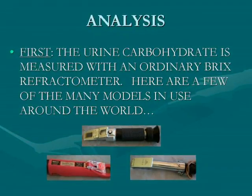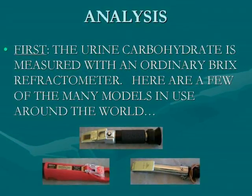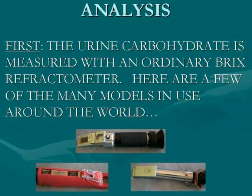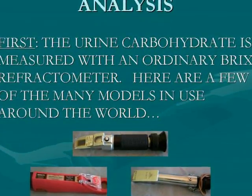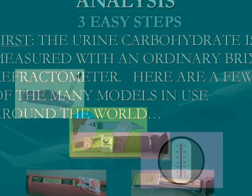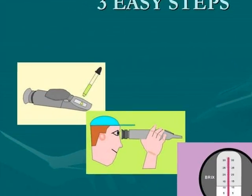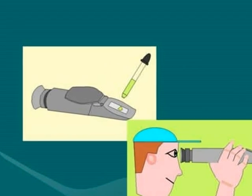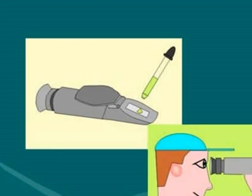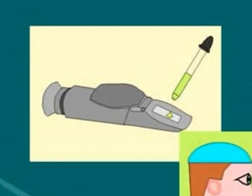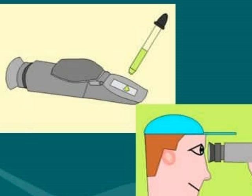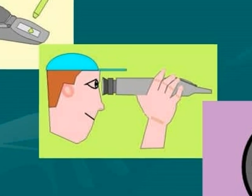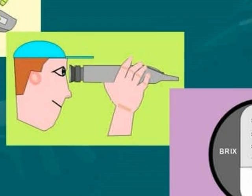The first part of the test or analysis is to measure the BRICS of the urine. Here are a few refractometers. Which kind you use doesn't matter as long as it's a good, high quality one. Urine BRICS testing is about as easy as anything could be. You're merely going to lay your sample or drop on your prism, flip it down, then look through the view eyepiece, and finally record what you see.